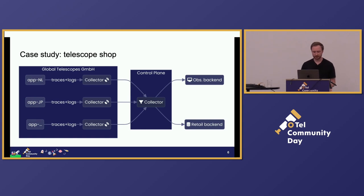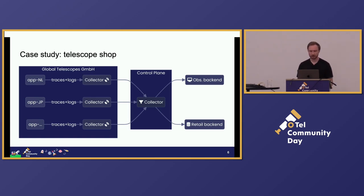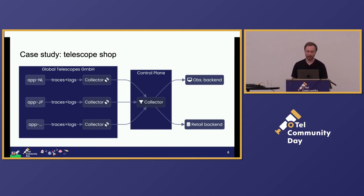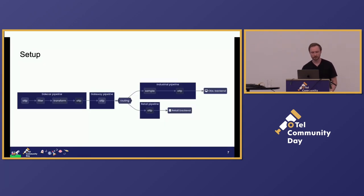And for this example, let's say that the gateway collector needs to do two things. First, as conglomerates do, the Global Telescopes company just acquired another company that is being added to its consumer retail arm. The new teams haven't yet fully integrated with the rest of the company, so the data from their apps needs to be routed into their old backend. And then for the rest of the data that is routed into the company-wide backend, it needs to be sampled to cut down on costs, and they want to do tail sampling — which needs to be added into a single collector to work properly.